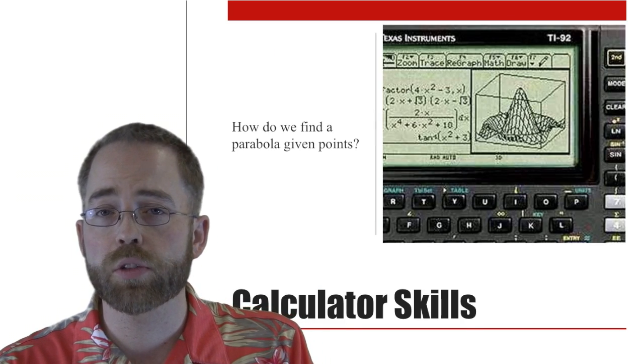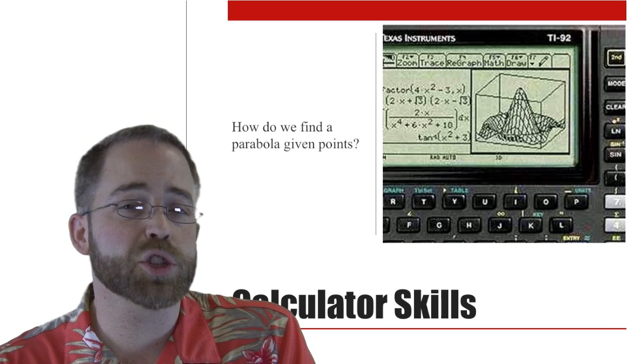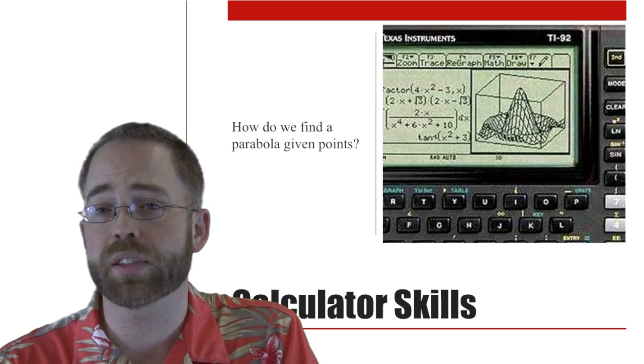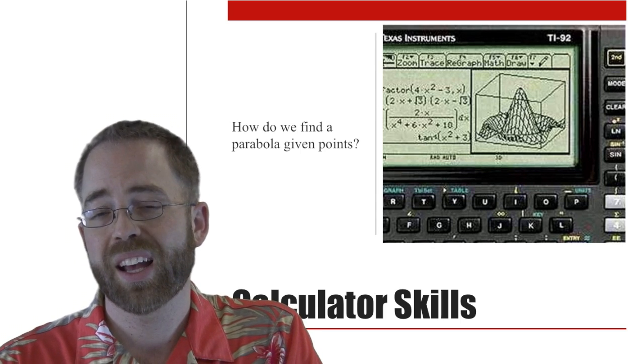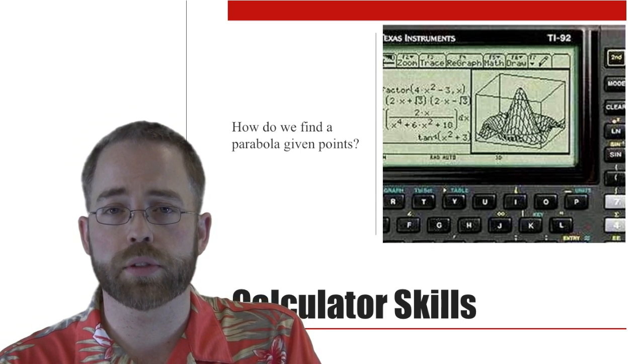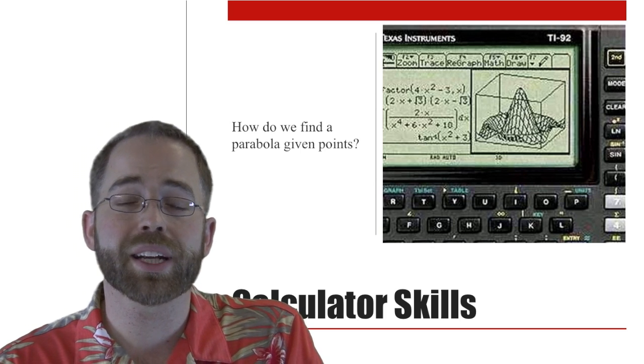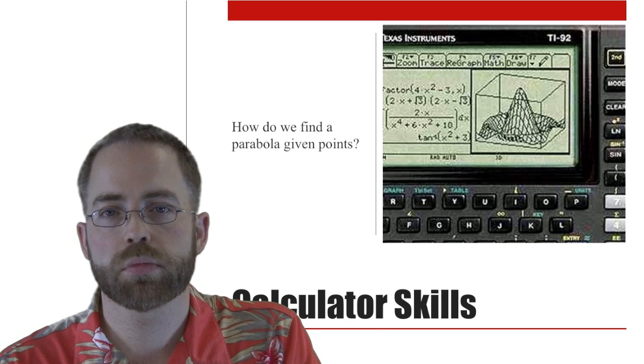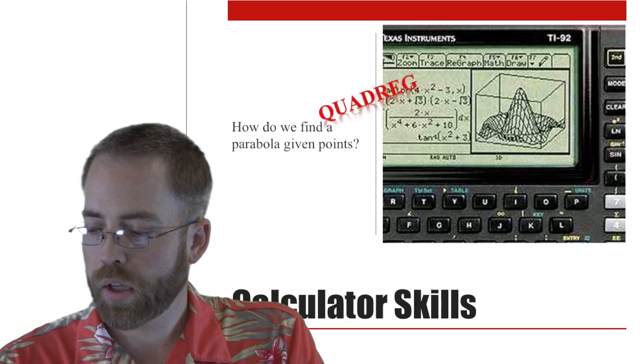So the calculator will do that for you. Again, you're going to just put in data into the stats section and then instead of doing lin reg, you're going to do quad reg. So I won't show you that. That's pretty straightforward. That's pretty easy to do. But it does give you ax squared plus bx plus c. So less desirable. Quad reg.